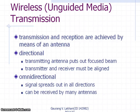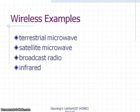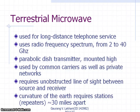Wireless transmission is normally either directional or omnidirectional. Wireless media examples include terrestrial microwave, satellite microwave, broadcast radio, and infrared. In terrestrial microwave, long-distance telephone services are supported using radio frequencies from 2 to 40 GHz. Dish transmitters are mounted on high buildings.